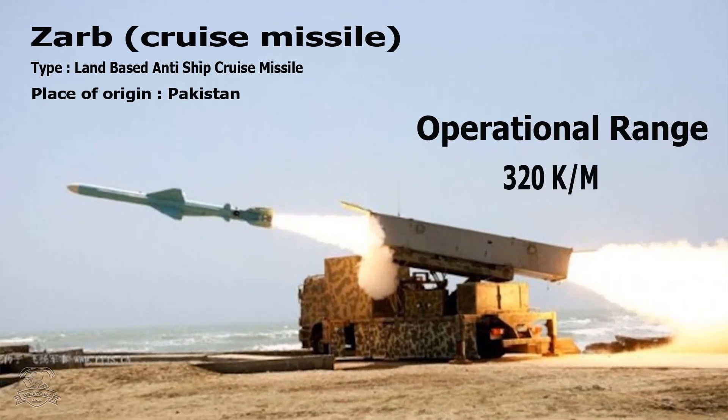ZARB Cruise Missile: Type – Land-Based Anti-Ship Cruise Missile, Place of Origin – Pakistan, Operational Range – 320 km.